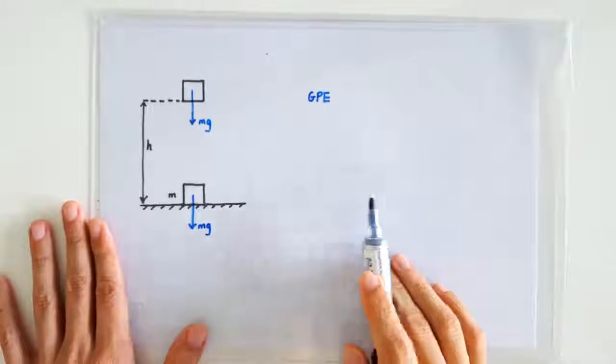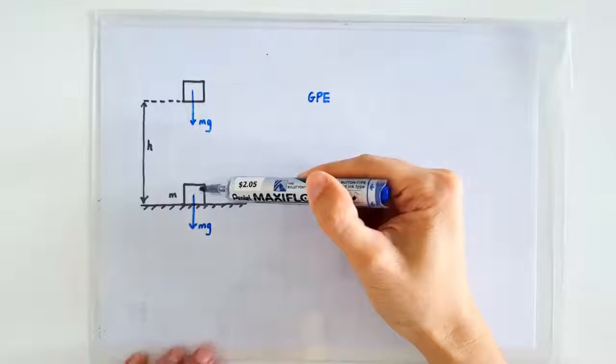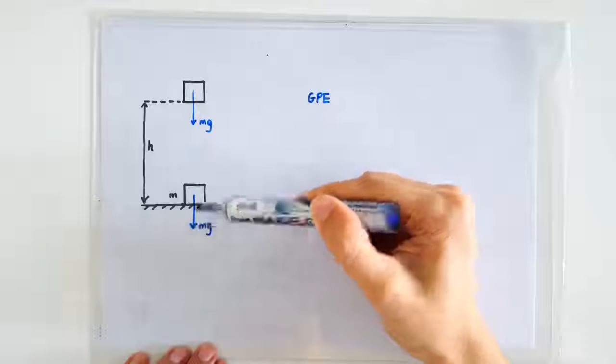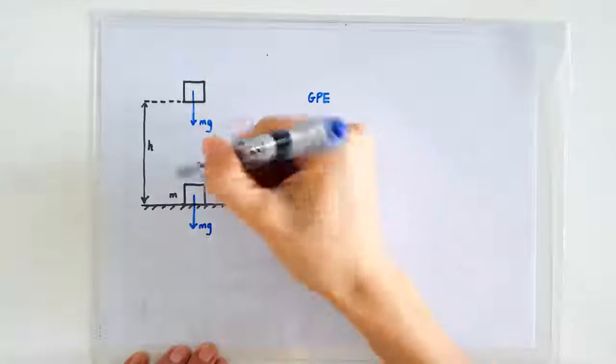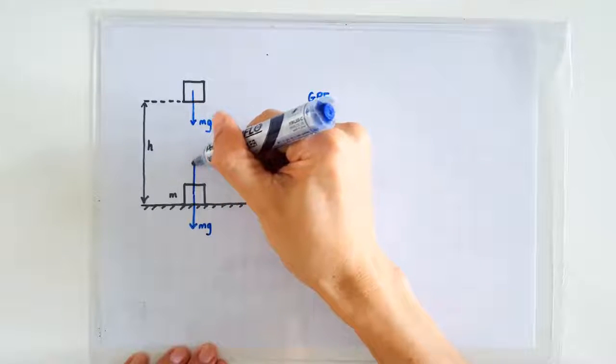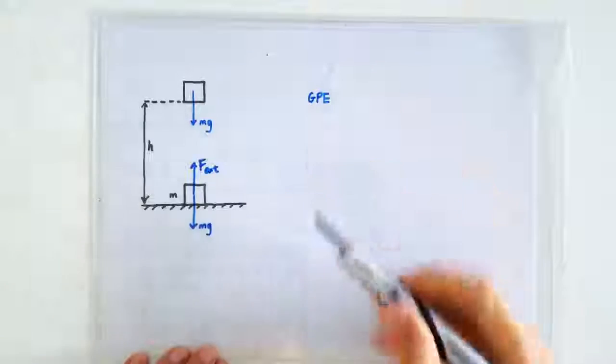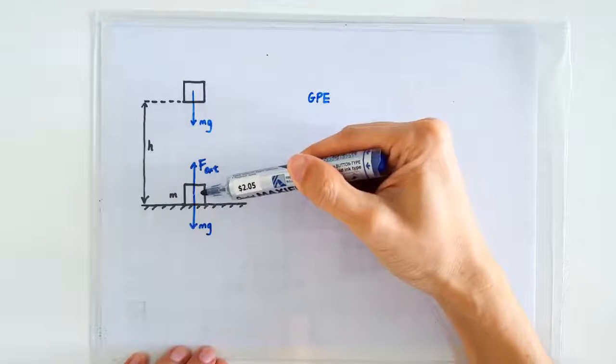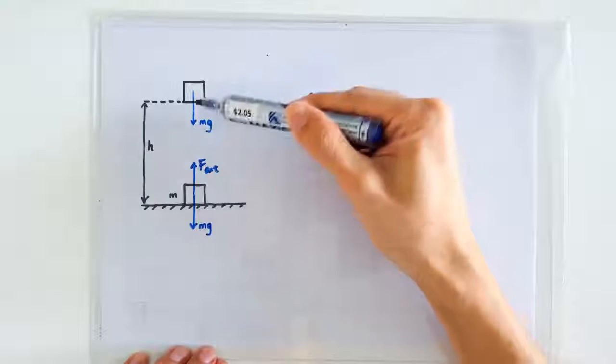The reason why there's such a thing called GPE is because the block is always pulled downward by its weight. So an external force is required to lift this mass from here to a higher height.